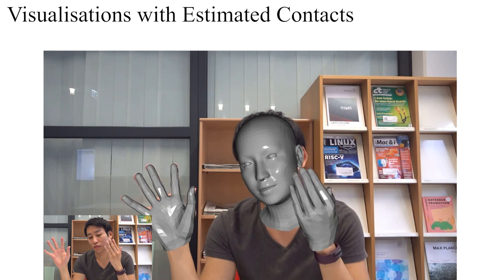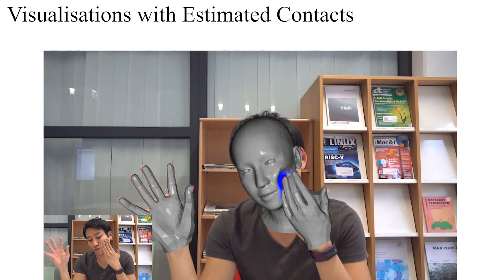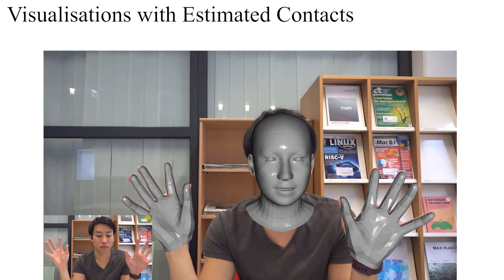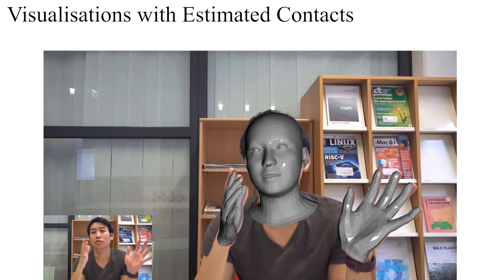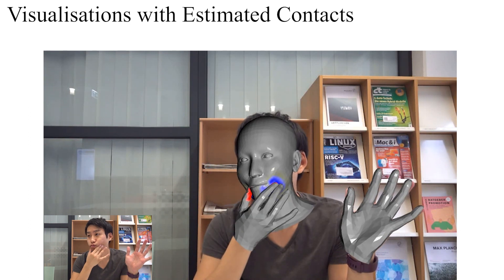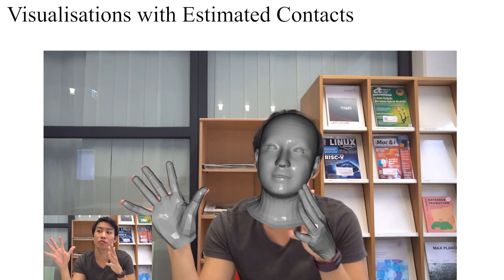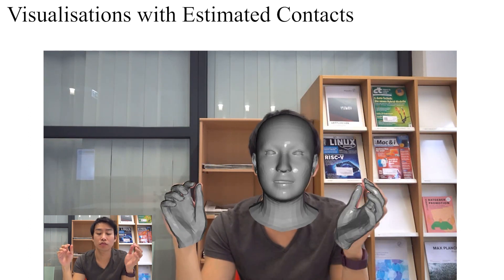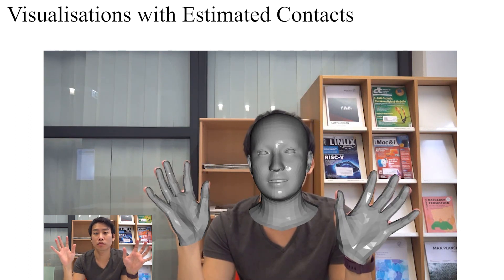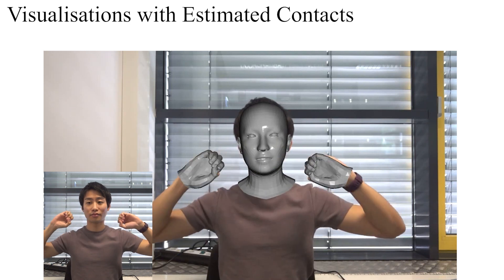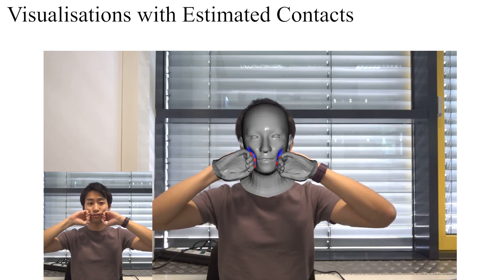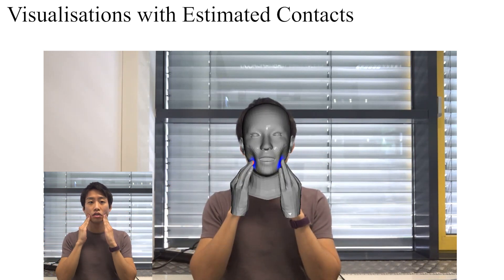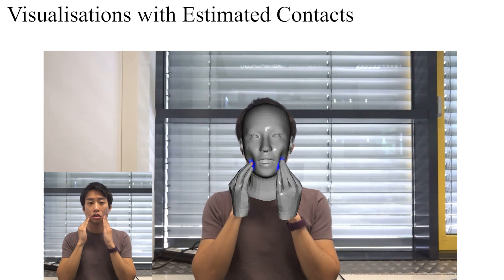We show our tracking results along with the estimated contacts by our network. The blue color on the face and the red color on the hands represent the estimated contact regions. Thanks to the estimated contacts and the deformations, our reconstruction shows highly plausible face and hand interactions.